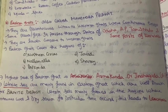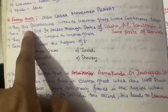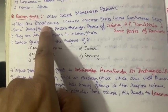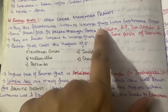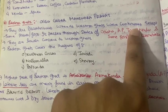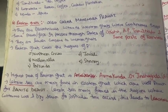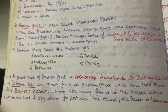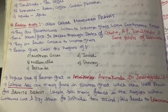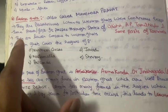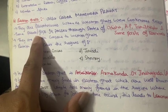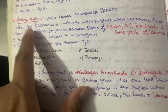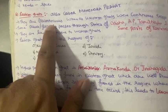Now let us discuss an important point. The ranges of the Eastern Ghats are discontinuous — that means there are gaps between the ranges. This is in contrast to the Western Ghats, which had continuous ranges, which is why orographic rainfall occurred very well there, because it blocked the winds. But here in the Eastern Ghats, the ranges are discontinuous. Remember this point.